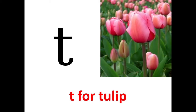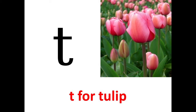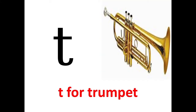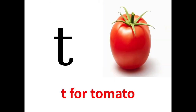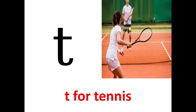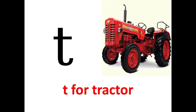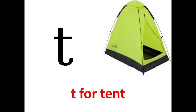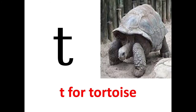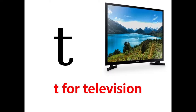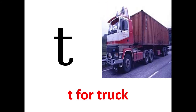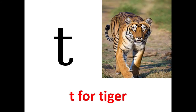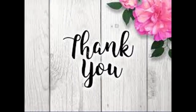T for tree, T says T. T for tulip, T says T. T for turkey, T says T. T for trumpet, T says T. T for TV, T says T. T for television, T says T. T for truck, T says T. T for tiger. Children, these were a few things that begin with letter T.